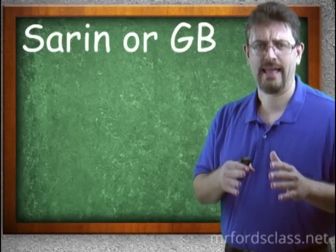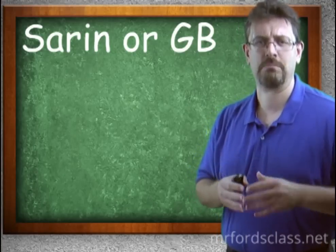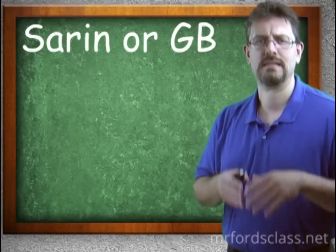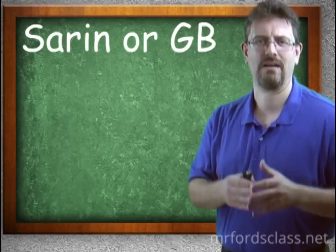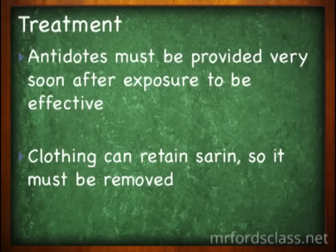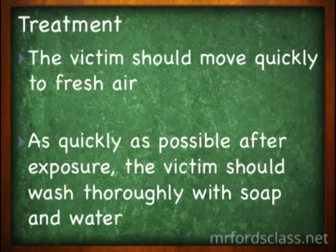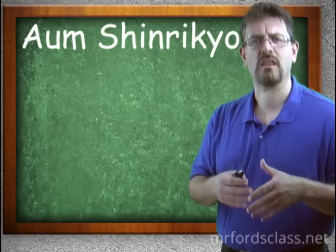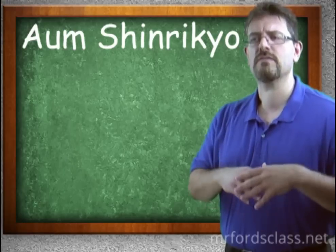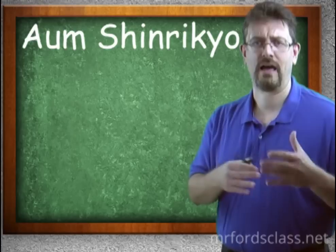There is some good in all of this: sarin does have an antidote, and sarin poisoning can be treated — but time is essential. If a person is exposed to sarin, they can be saved, but timing is everything and they have to be treated immediately. Clothing must be removed, as it can retain sarin. The victim should be taken to an open area as quickly as possible to get fresh air, and they should thoroughly wash themselves with soap and water. A case study on Aum Shinrikyo found that many first responders also received sarin poisoning because victims still had it on their clothing — through training, they figured out how not to repeat that mistake.